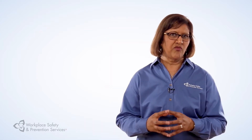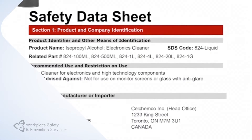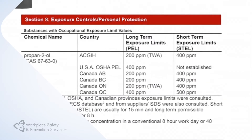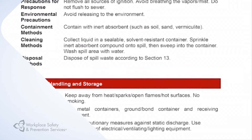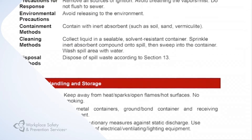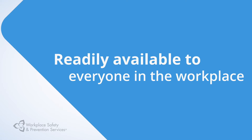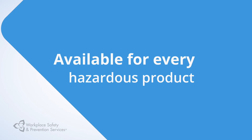The second key component of WHMIS 2015 is a safety data sheet, or SDS. This is a document provided by the supplier of the product. The SDS provides more detailed information about the hazardous product than what is found on the label — information like safe handling, storage, and emergency measures. Safety data sheets must be readily available to everyone in the workplace, close to where the hazardous products are present, stored in a binder or electronically on a computer, for every hazardous product covered by WHMIS 2015.